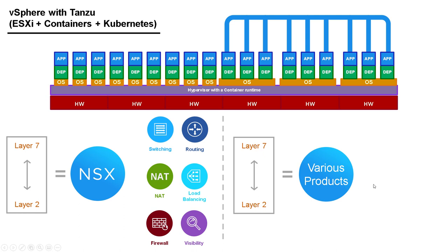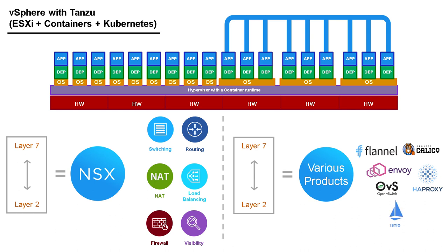I'm going to list some of the most common container networking products you may have heard of: something called Flannel, something called Calico, a proxy called Envoy, HAProxy, OpenVSwitch, Istio, and NGINX Ingress Gateway. There are lots of different products that do all of this — I actually found 26 other networking products in this space before I remembered that last one was the NGINX Ingress controller. These are probably the most common ones you'll see, and some of them overlap in what they do.